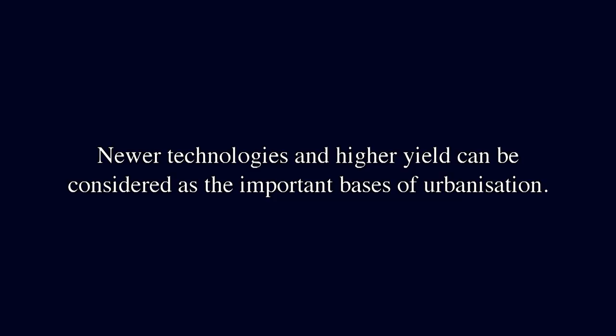Now we will talk about second urbanization and complex state societies. The process of urbanization in early historic India presumes the support of a prosperous hinterland. Environmental conditions like land, soil, and moisture not only conditioned the hinterland and its agriculture viability, but also had a direct bearing on the specific crops being produced. Newer technologies and high yield can be considered as the important basis of urbanization. The forces unleashed by these socioeconomic changes created favorable conditions for the arrival of complex state societies.